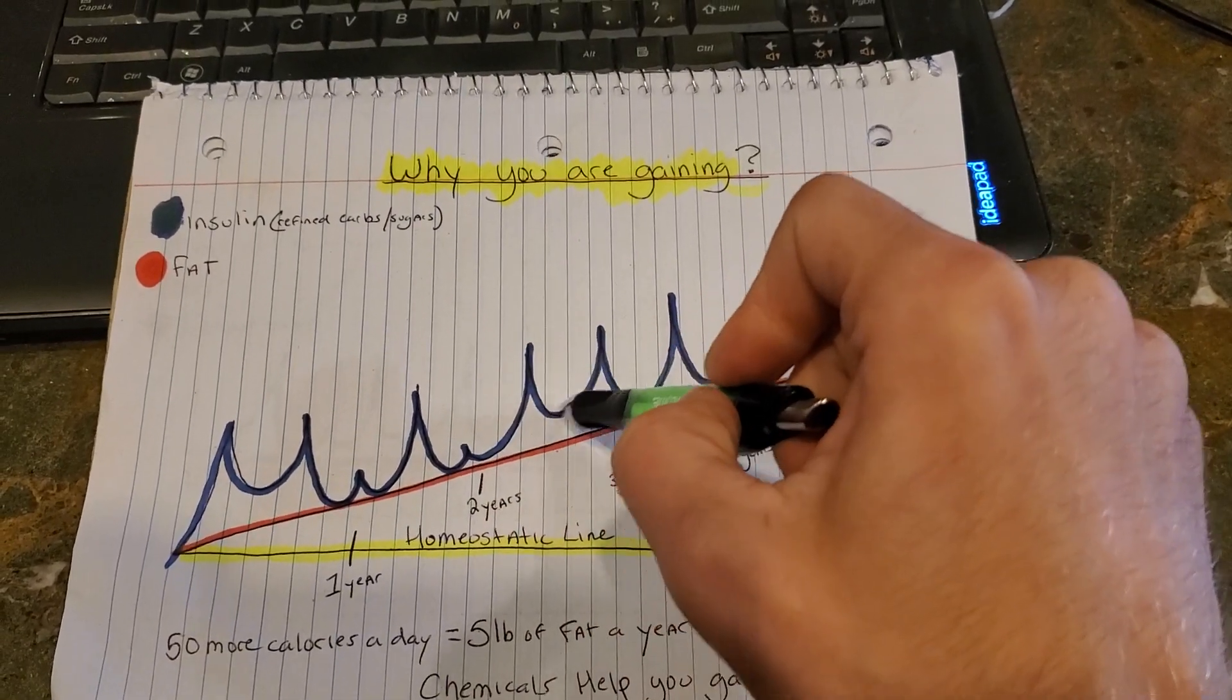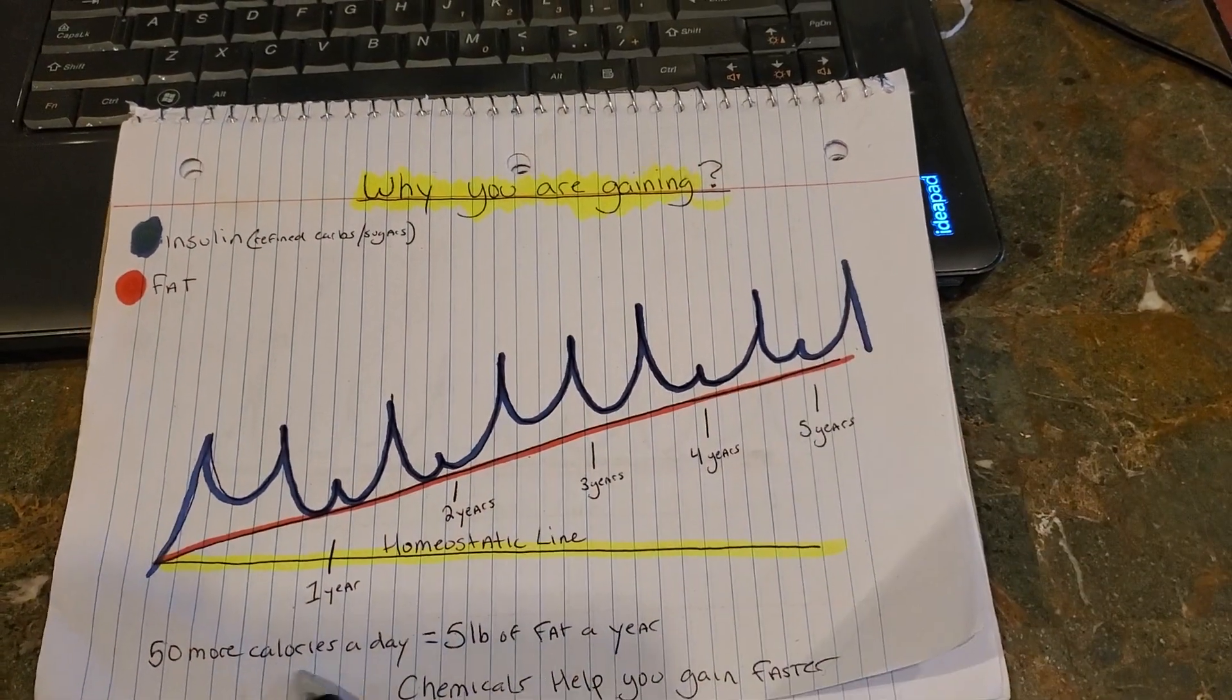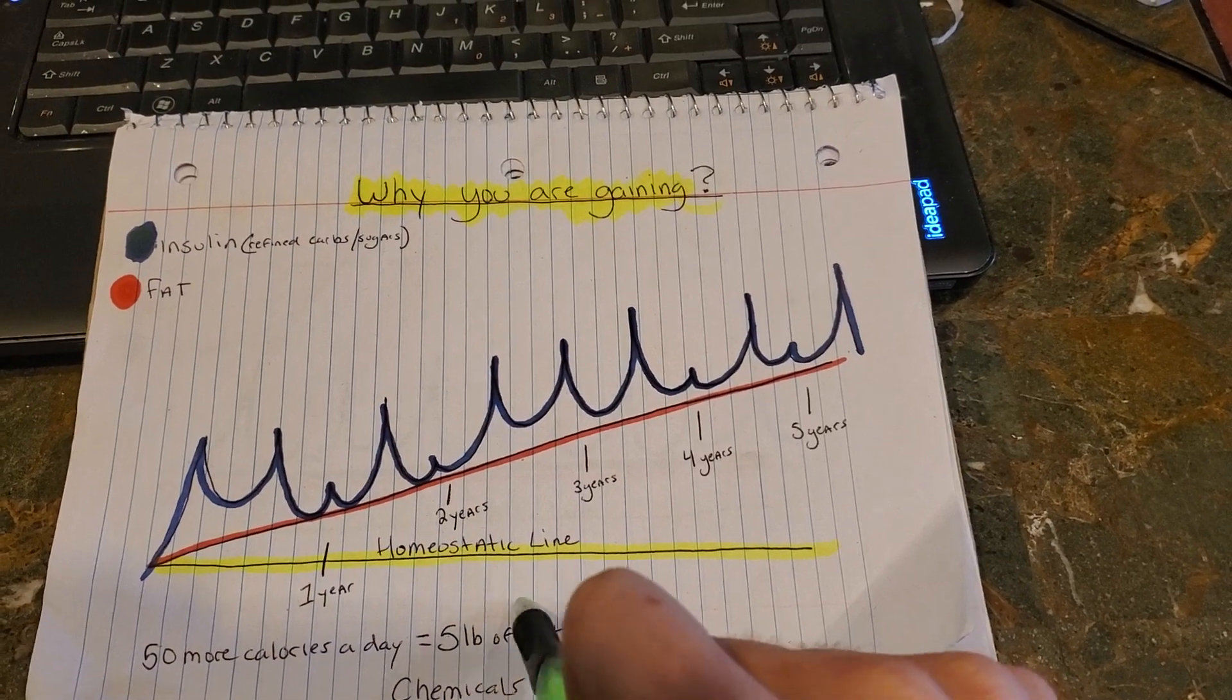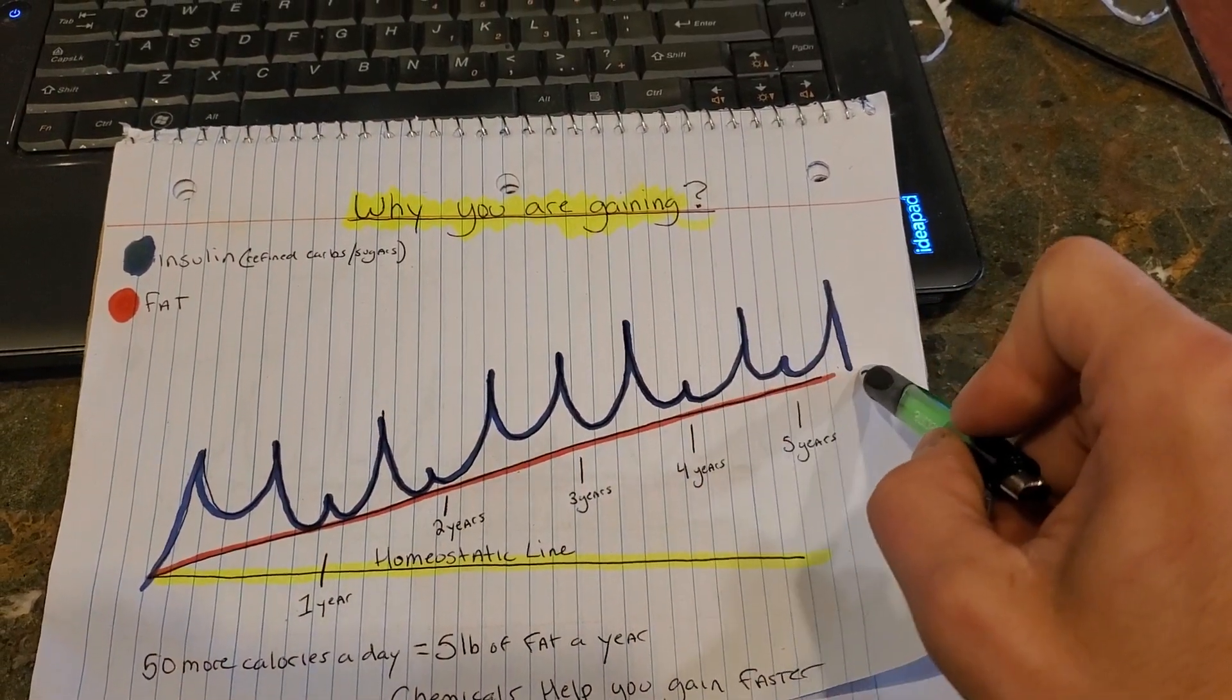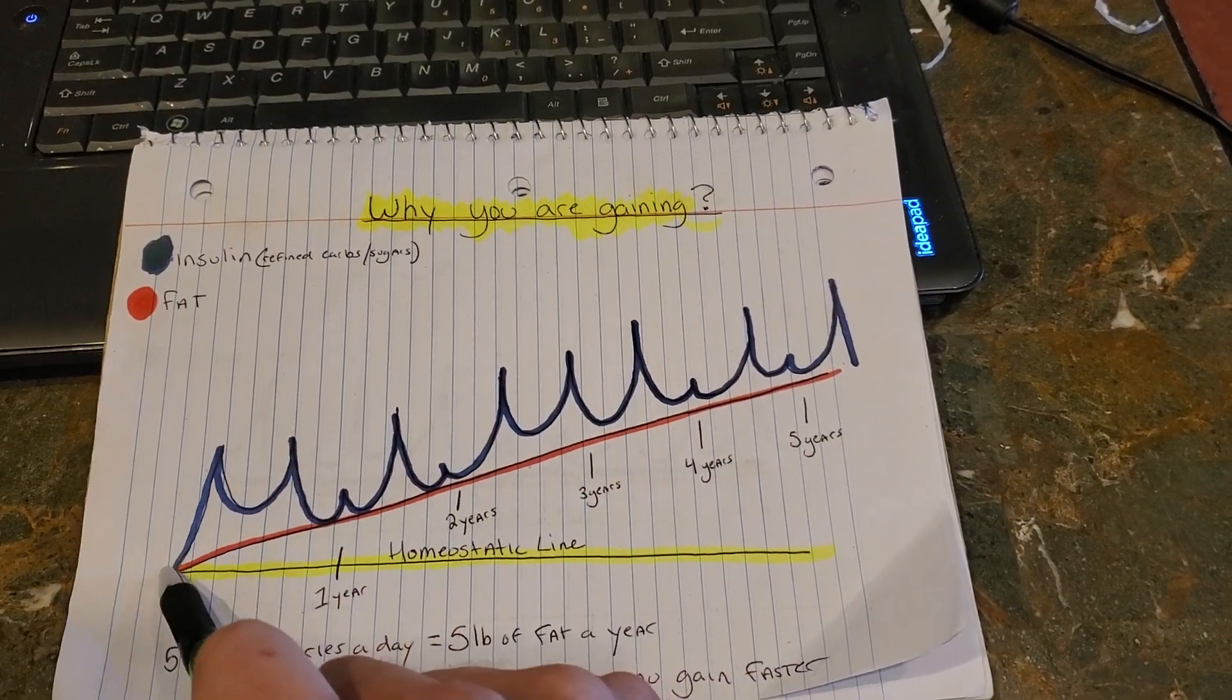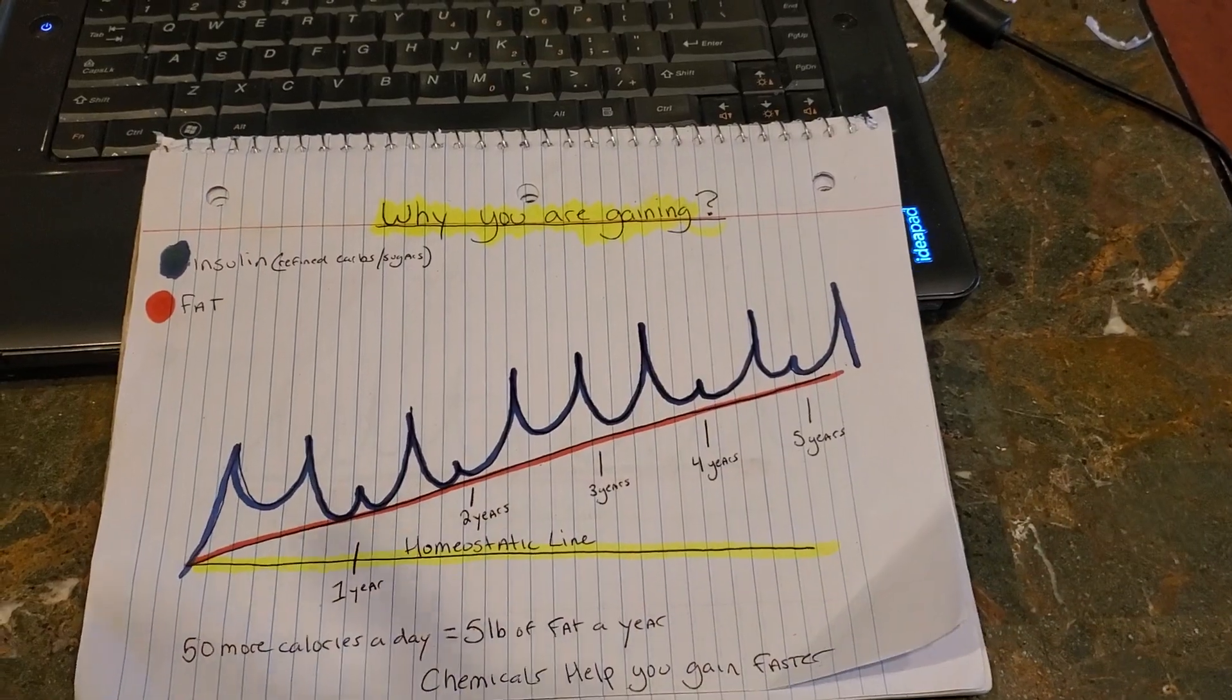When you continually do this over the years, you slowly are gaining fat. Just something as simple as 50 extra calories a day without an exercise program, you're going to gain about 50 pounds in 10 years. Think about it. You're altering away from your homeostatic line. So chemicals are also going to help you gain weight faster.